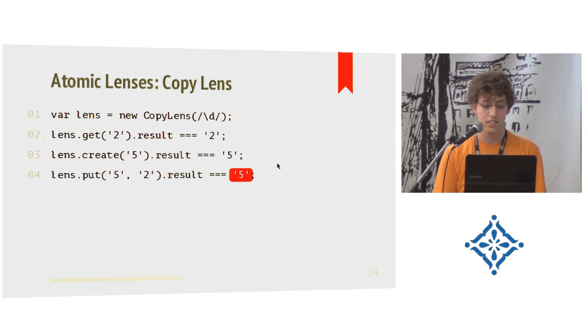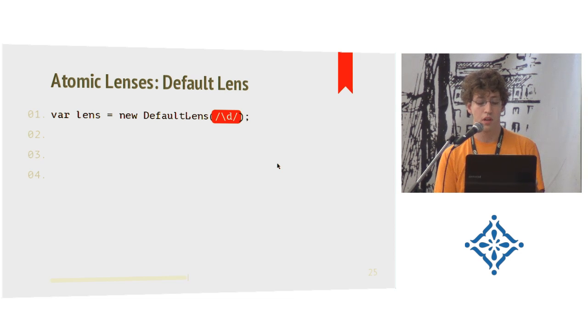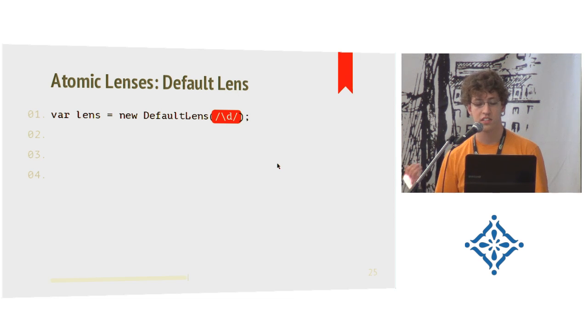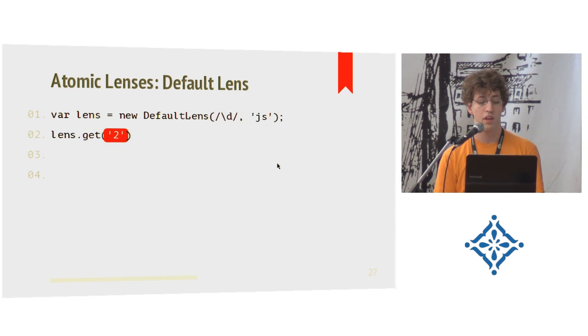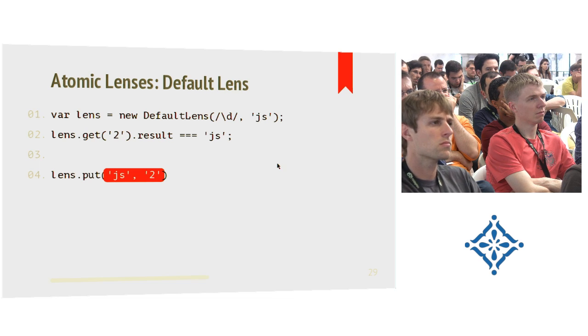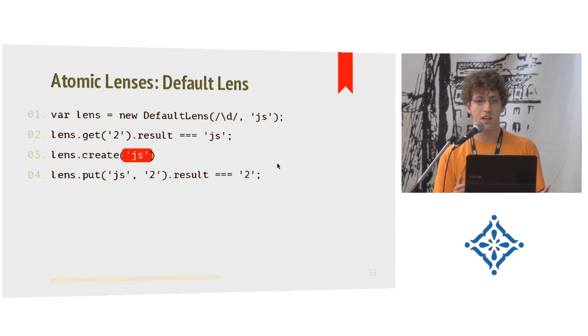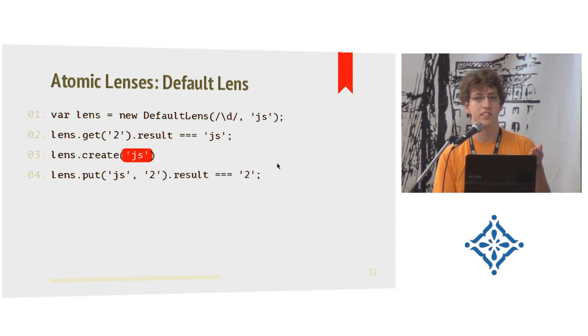A slightly more difficult lens is the default lens. It again takes a regular expression as the first input, but what it does now - it doesn't copy the thing, but it transforms it to something else. Let's say, for example, a string called JS. So now you put in a 2 and you get back a JS. This time I will first show you the put because it's simple. You have the updated string which is a JS, and then you have the 2 which was the original source, and you get back the 2. The problem is now, what are we going to do about the create? I mean, it would need to create somehow something to match the regular expression, but it's really hard to create something that matches a certain regular expression. So the easy solution is you just supply it with the default value when you create the lens. So this transformation will just create an all.